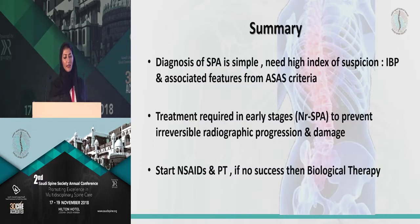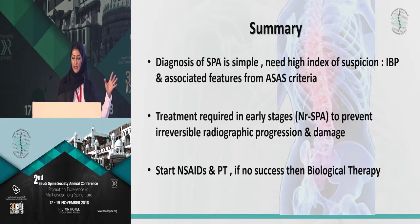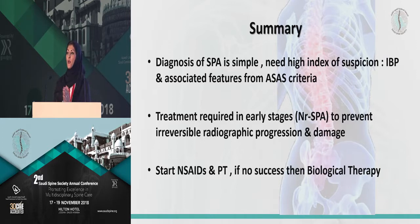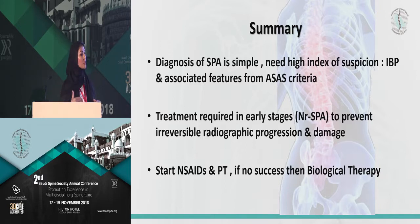To summarize: diagnosis of SpA is very simple — it just needs a high index of suspicion. Apply the inflammatory back pain criteria; we've made it easy for you, just have your copy. Apply the ASAS criteria, again with a high index of suspicion. Treatment is required in the early stage — the non-radiographic SpA — before damage and X-ray changes happen. Please, when you diagnose the patient, start physiotherapy and NSAIDs, so when the patient comes to us and has not responded to treatment, we can go to the next step: biologic therapy.